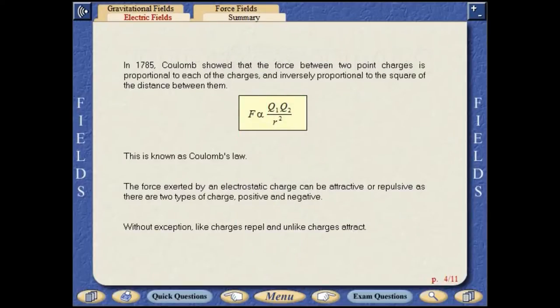In 1785, Coulomb showed that the force between two point charges is proportional to each of the charges and inversely proportional to the square of the distance between them.